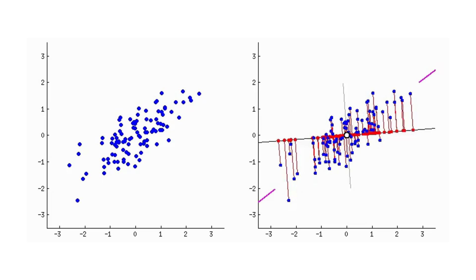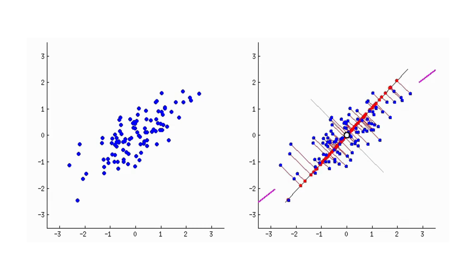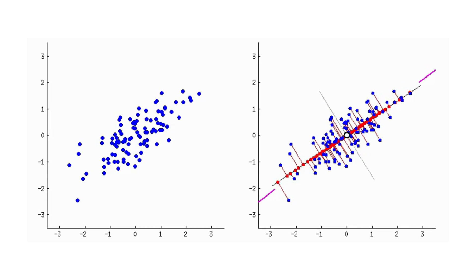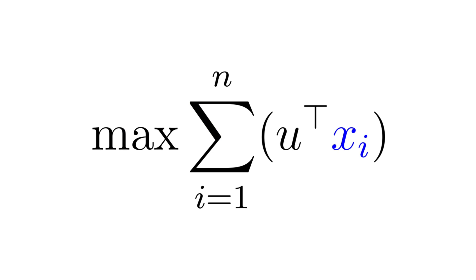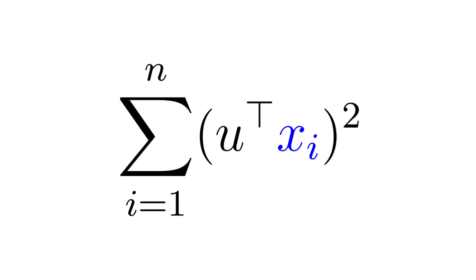With that in mind, we want to choose a direction u such that the data points xi project as strongly as possible onto it, meaning they're as aligned with u as they can be. So naturally we want to maximize the total projection of all data points onto u. But there's a problem: the dot product can be positive or negative depending on the angle between xi and u. But we only care about the magnitude, not the direction. So instead of summing the raw projections, we sum their squares.